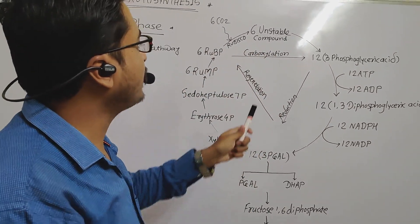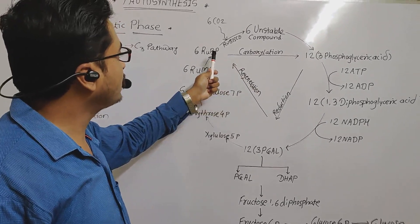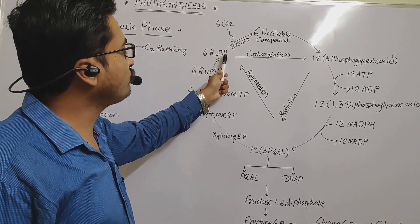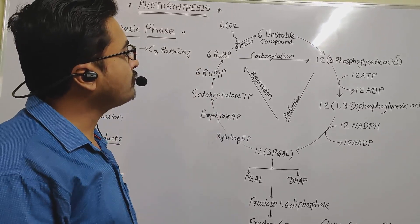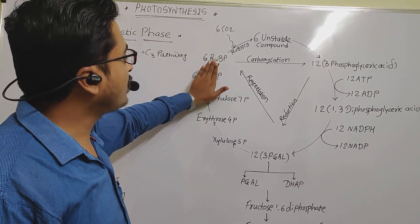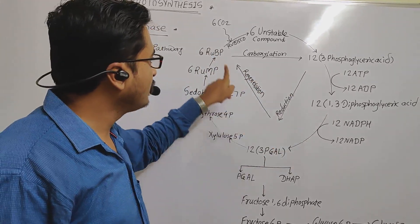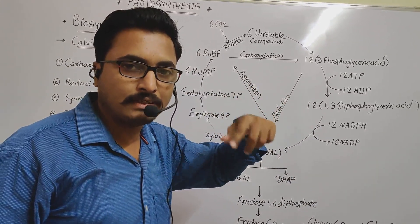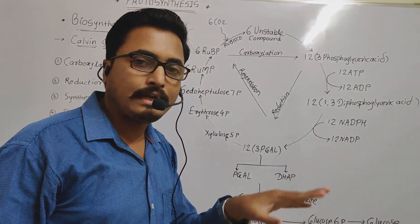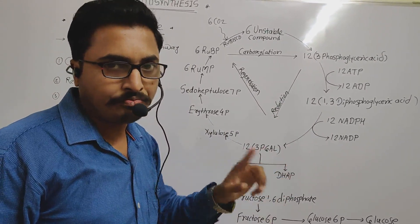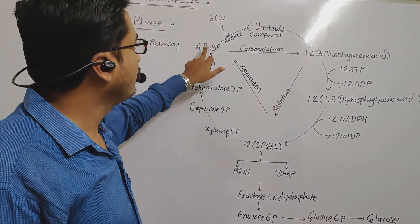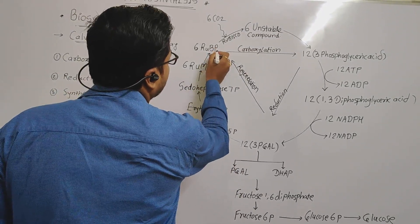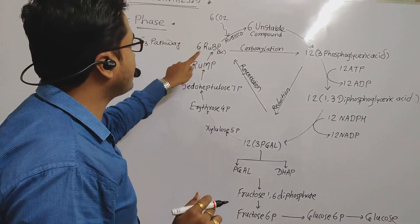The Calvin cycle starts with carboxylation. Carbon dioxide combines with a 5-carbon compound called Ribulose Bisphosphate (RuBP). We consider 6 molecules here — because one compound has 5 carbons, 6 molecules means 30 carbons total. An enzyme called Rubisco (Ribulose Bisphosphate Carboxylase Oxygenase) catalyzes this CO2 fixation. Here, 6 molecules of CO2 are fixed.